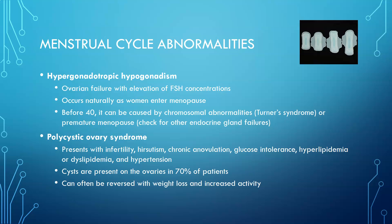Hypergonadotropic hypogonadism is ovarian failure with elevation of FSH. This occurs naturally as women enter menopause when the ovaries stop working. If it happens before age 40, it could be caused by chromosomal abnormalities such as Turner syndrome or premature menopause. In these cases, you may also want to check for other endocrine gland failures, such as thyroid or adrenal dysfunction.